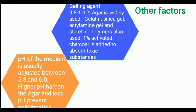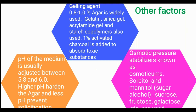Generally 1% activated charcoal is added to absorb toxic substances in certain cases involving phenolic and tannin components. Regarding osmotic pressure, we have to add stabilizers of osmotic pressure such as sorbitol and mannitol, and sucrose, fructose, and galactose. These agents are called osmoticums and maintain osmotic balance so that plants can successfully intake nutrients from the nutrient medium.